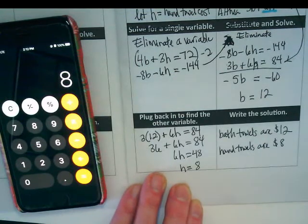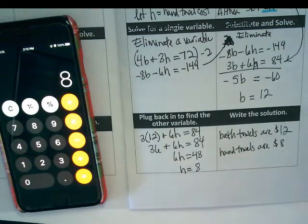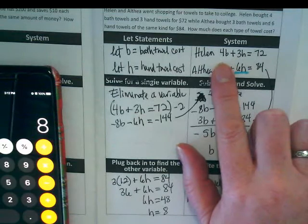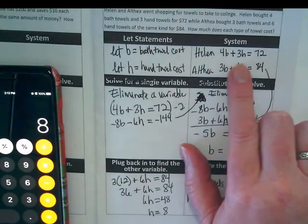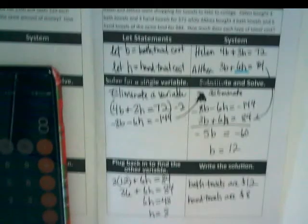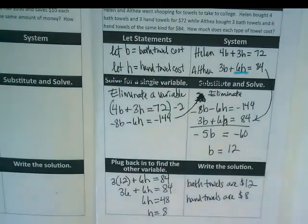Now maybe I was really cheap when my kids went to college. But I would have been like, what are you using all those hand towels for? Buy two bath towels and cut one in half. How can I check that? I can take the 12 and 8 and I can go back up to my original equations and say 4 times 12 plus 3 times 8. Does that get me 72? And I can check it.